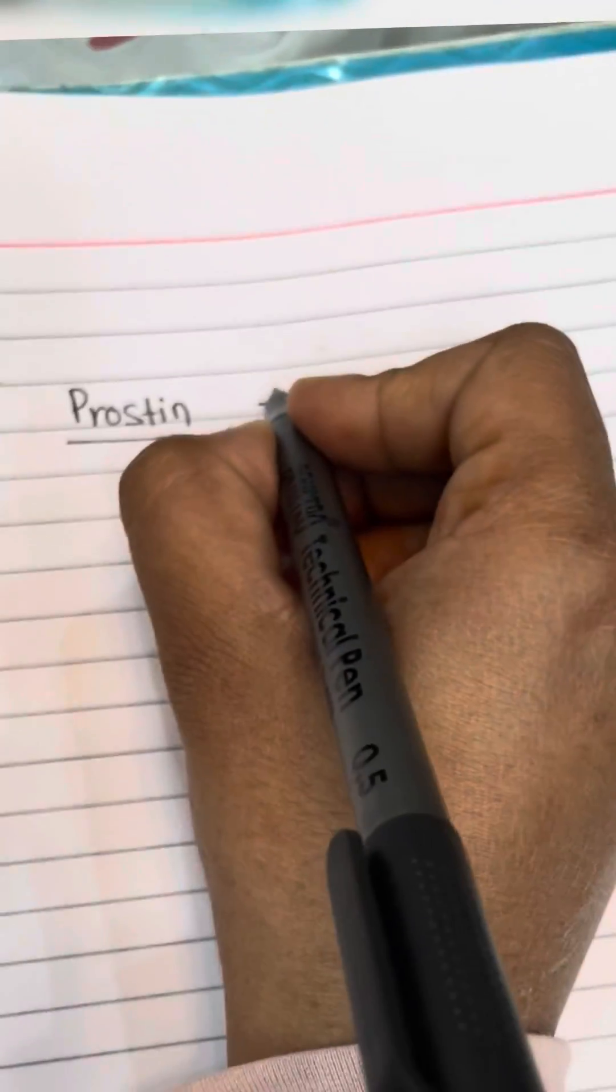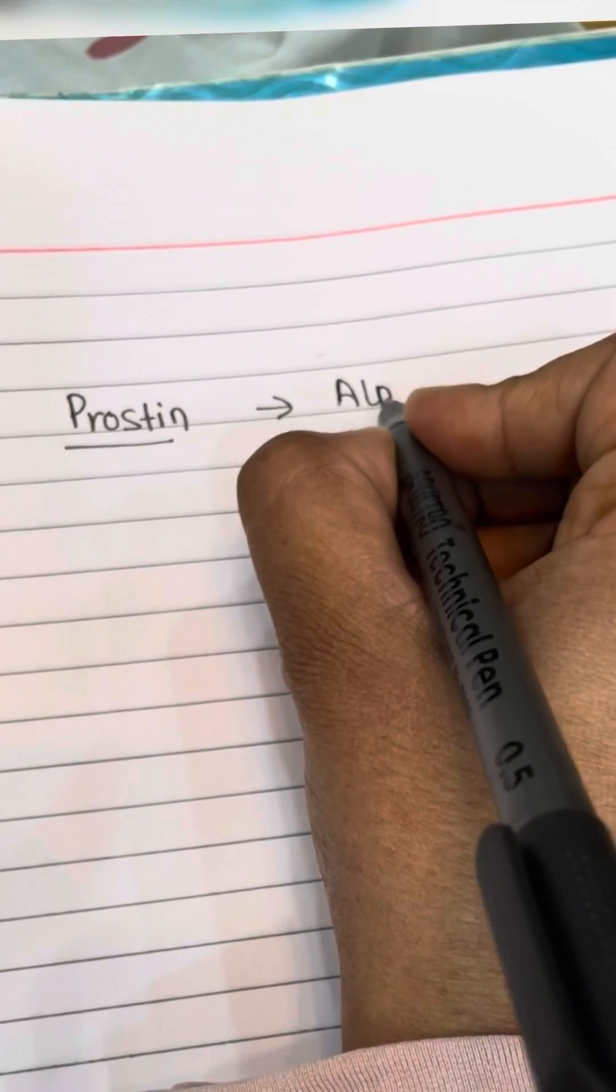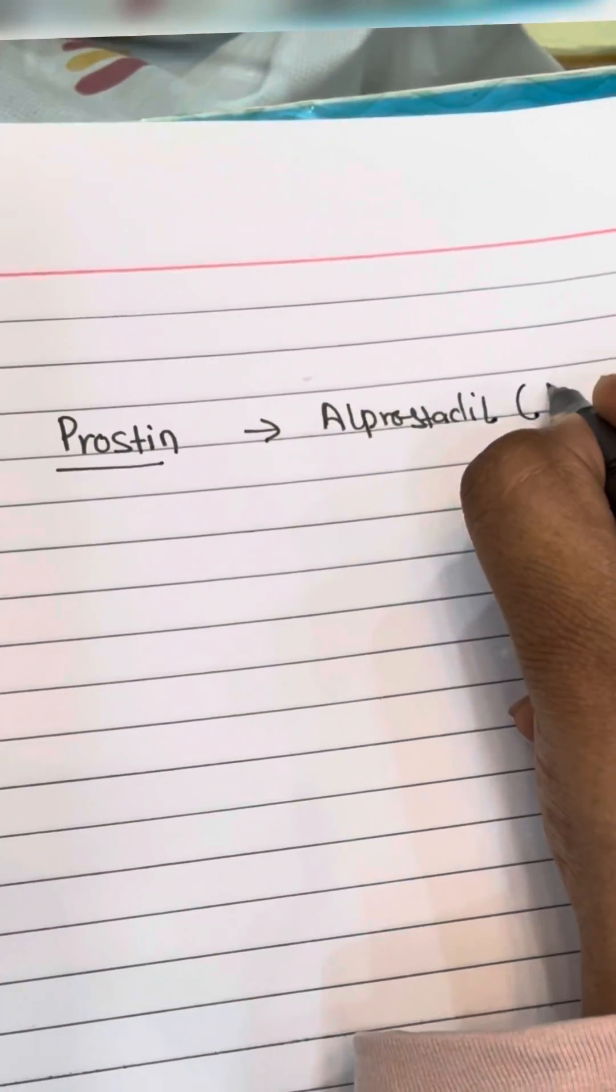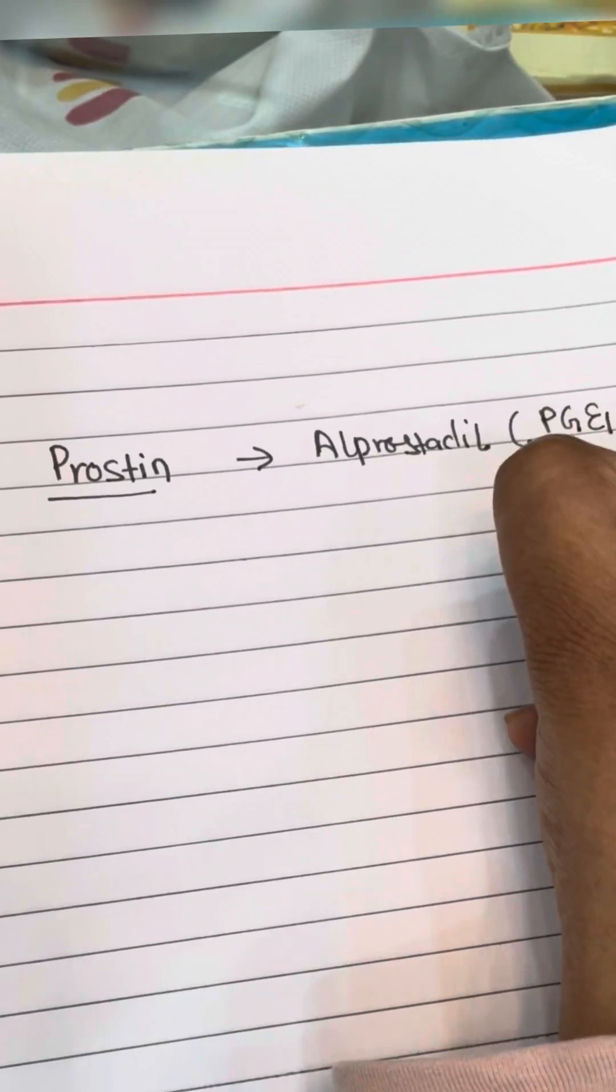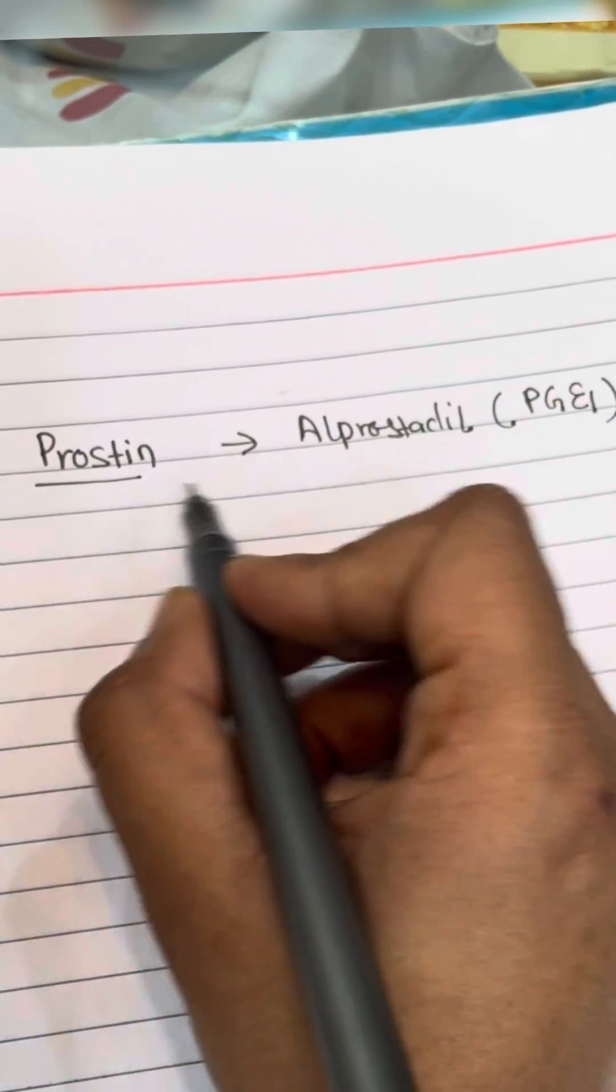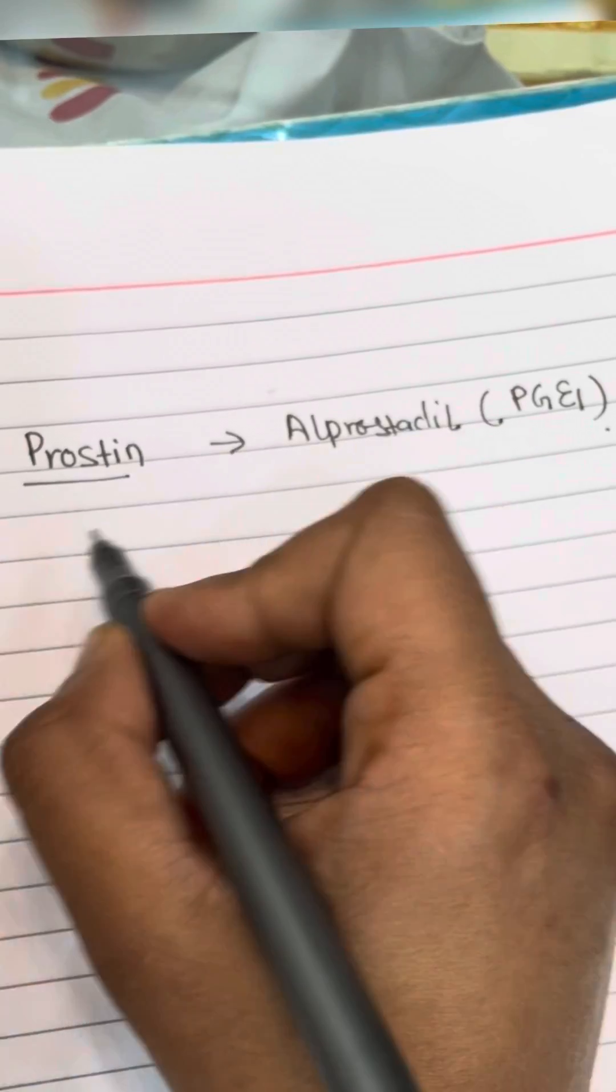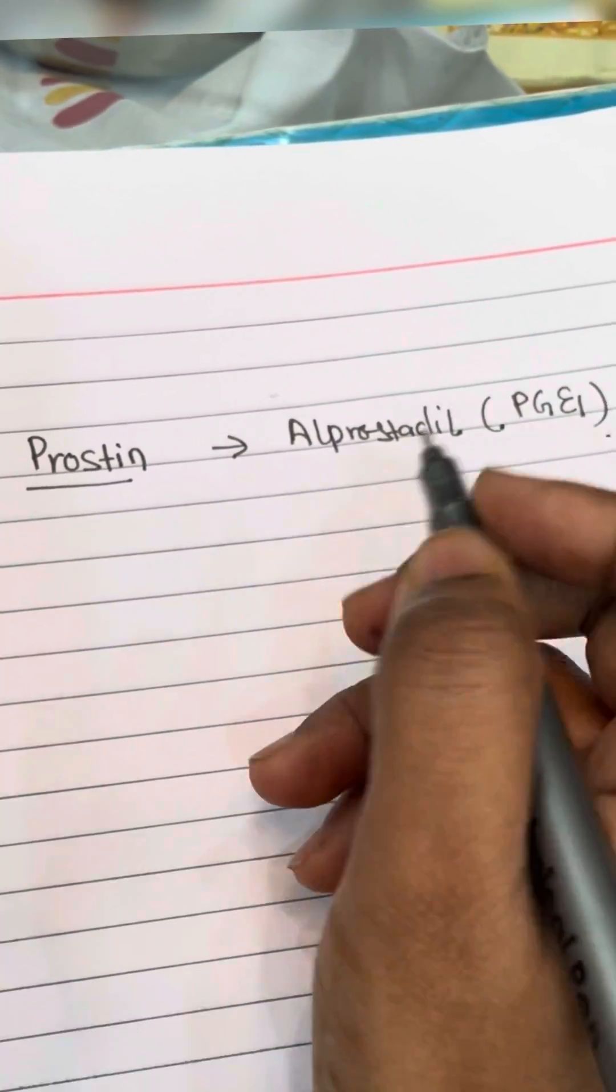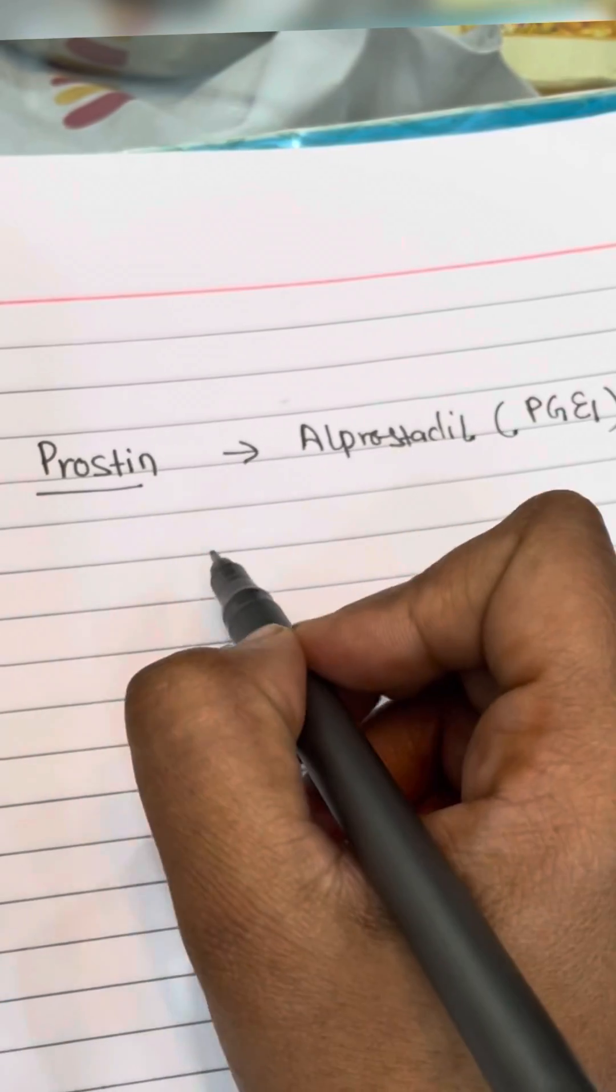Hi guys, today we will be learning how to make prostin infusion. Prostin, as we all know, is the brand name for alprostadil, which is prostaglandin E1. It is used for keeping the ductus arteriosus patent in babies with congenital heart disease or congenital anomalies wherein we want the duct to be patent.